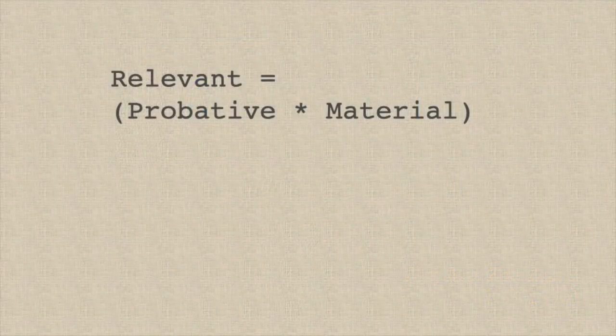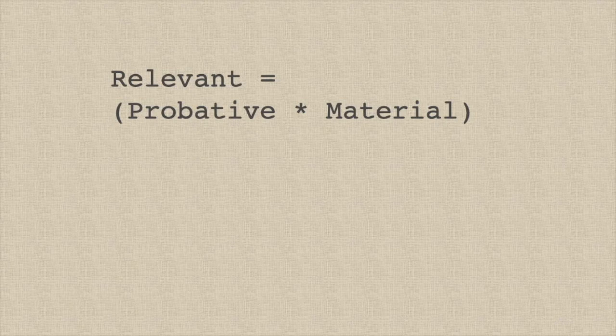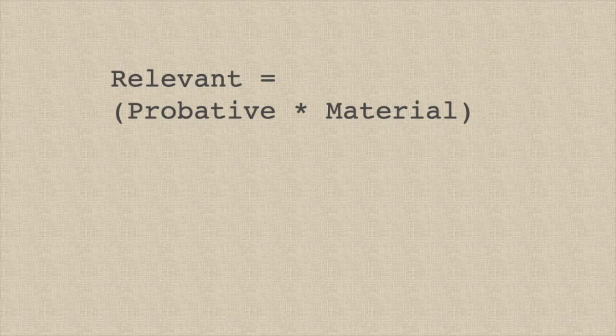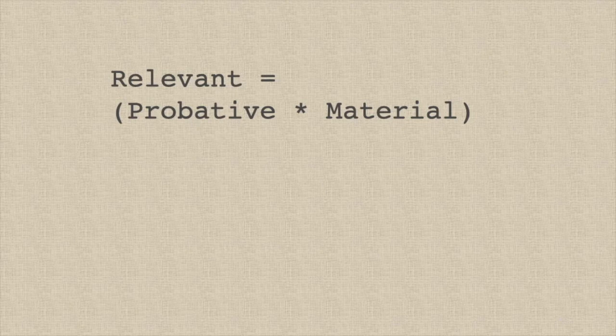The basic principle of evidence law is that only relevant evidence is admissible. A fact offered in evidence is relevant just in case it is probative of some material fact. Proffered evidence is probative of a fact just in case the fact is likelier to be true given the evidence than it would be without the evidence. Proffered evidence does not have to make that fact highly likely — it can be probative even though it makes a fact only a tiny bit likelier.